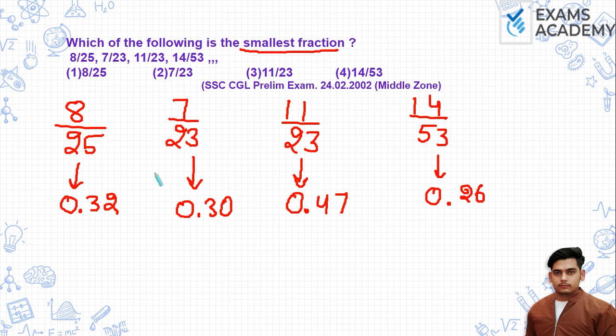If we compare these values — 0.32, 0.30, 0.47, and 0.26 — the smallest value is 0.26.